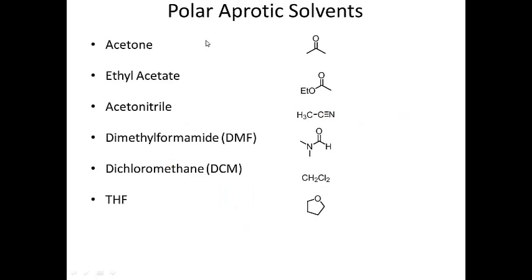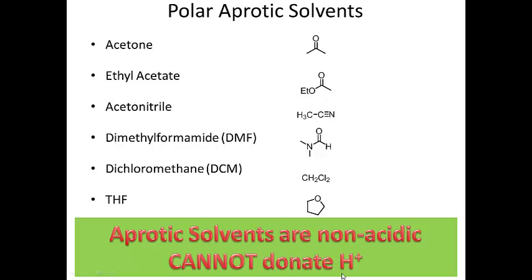An aprotic solvent is basically a solvent that cannot donate a proton or H⁺ — that's what aprotic means, no protons. Examples of polar aprotic solvents are acetone, ethyl acetate, acetonitrile, DMF, dichloromethane, and THF. Solvents containing a carbonyl have a part that is partially positive and partially negative — for acetone, the carbon is partially positive and oxygen is partially negative — making them polar due to that charge separation.